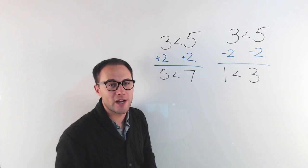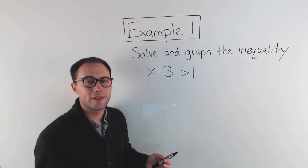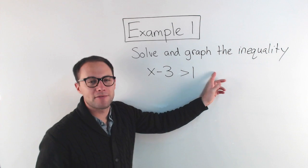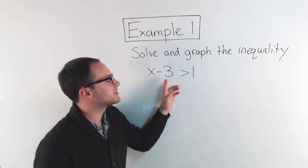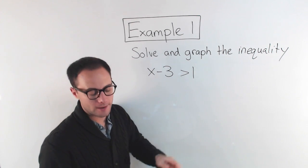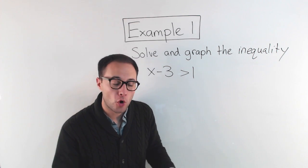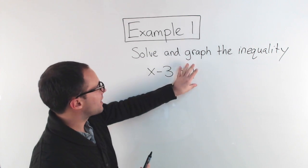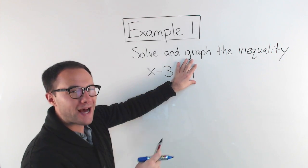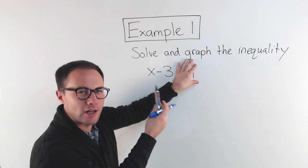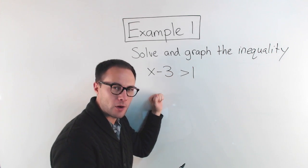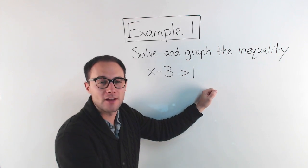So let's keep that in mind and let's try an example. Here we go with example 1, solve and graph the inequality. So we have x minus 3 is greater than 1. When solving inequalities, it's just like solving equations. The whole goal is to get that variable alone. We want to isolate the variable, get it alone, where we have the variable on one side and then whatever else on the other.